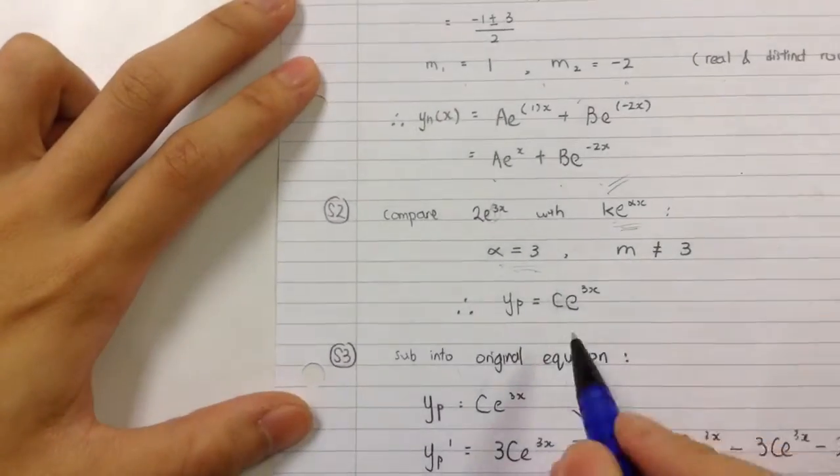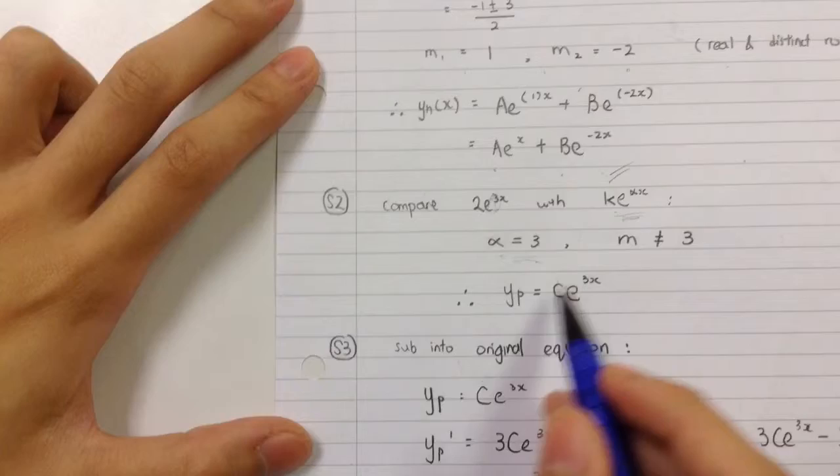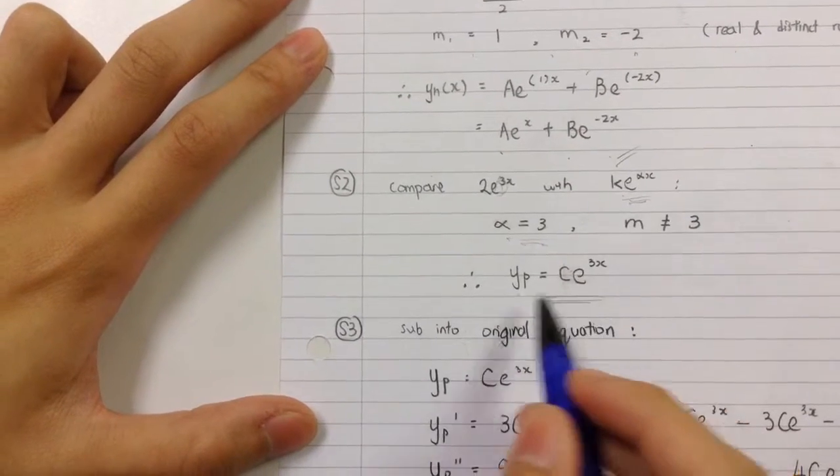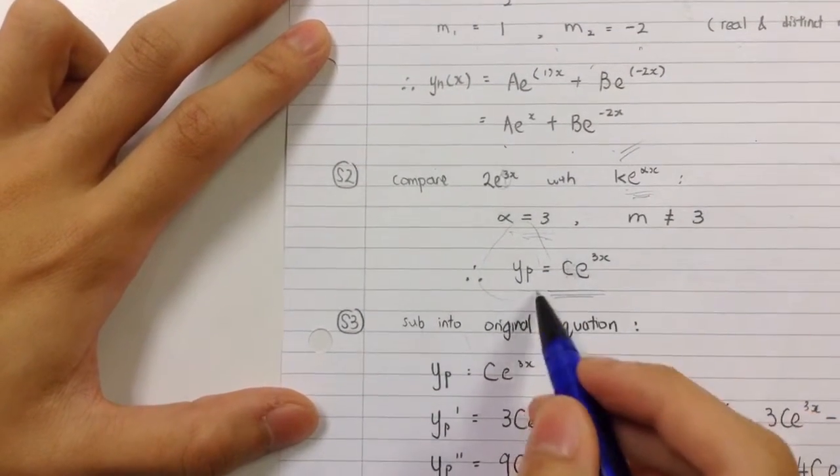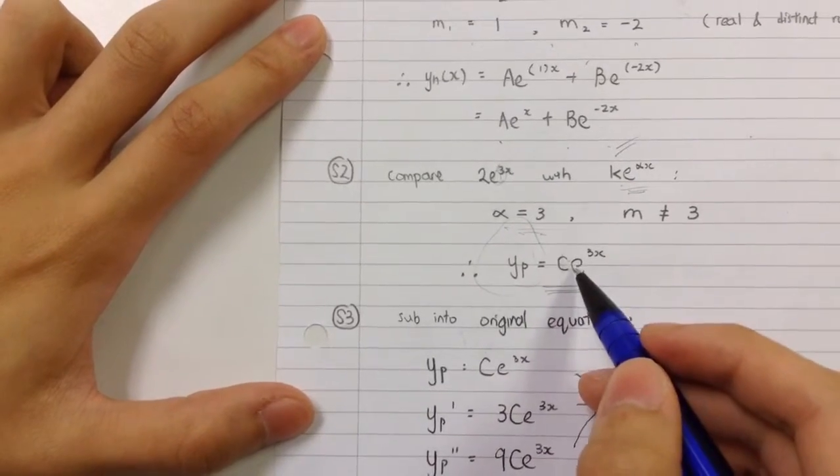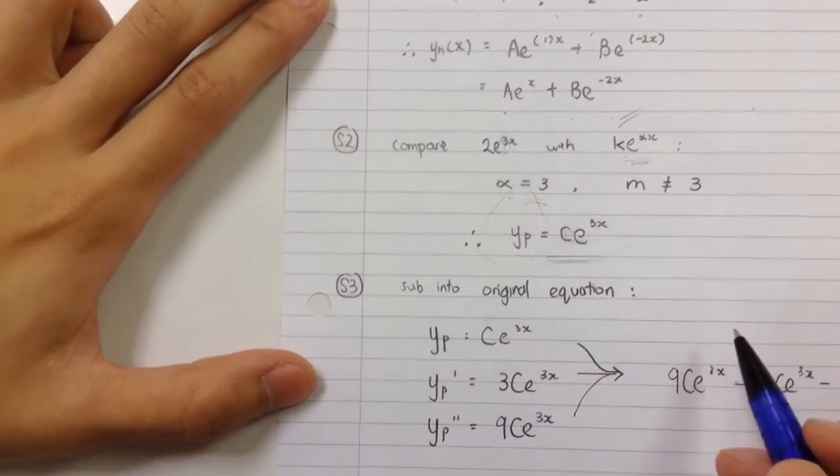So I substitute the equation into this to find the particular solution, which is Yp equals C e^(3x).